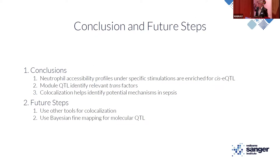In conclusion: I've shown that there are neutrophil accessibility profiles under specific stimulations enriched for cis-eQTL in our cohort; that module QTLs will hopefully help identify trans-regulators of interest; and that co-localization can help understand mechanisms underlying the septic response. Future steps include using other co-localization tools like hyper-co-loc, which provides a joint model for shared samples, and Bayesian fine mapping tools such as FineMap and SuSiE.